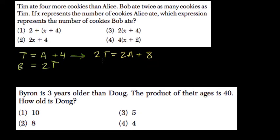And now I can simply substitute this into here. So B does equal 2T, but 2T equals 2A plus 8. That means that the amount Bob ate is equal to twice what Alice ate plus 8.